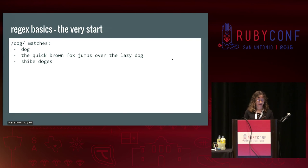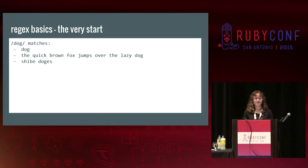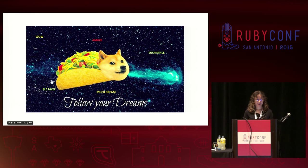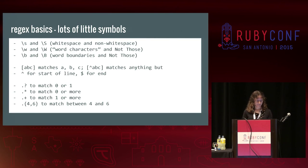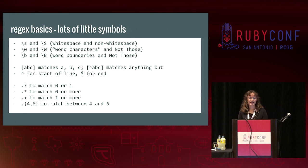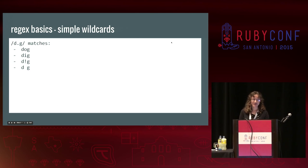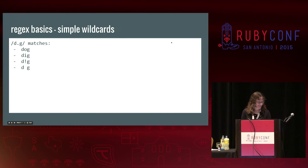Here's the simplest regex I can think of. It searches a given text for the letters D, O, and G in that order with no characters between them, so it'll match any of those strings. Here's a less trivial example. In this one, we use the period wildcard to match any character. The regular expression D-period-G can match the strings dig, D-space-G, D-exclamation-point-G, or a lot of other things.